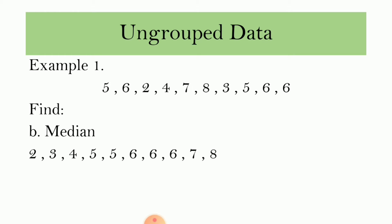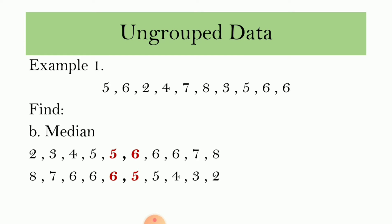Let us also arrange it in descending order: 8, 7, 6, 6, 6, 5, 5, 4, 3, 2. Then get the middle values. As we can see from both arrangements, we have two middle values which are 5 and 6. Then, get the arithmetic mean of those two middle values. That is 5 plus 6 divided by 2, which is 11 divided by 2, equal to 5.5.